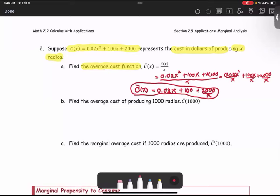In part B, we're going to find the average cost of producing 1000 radios, or C̄(1000). We're going to use the C̄(x) function that we derived in part A. So C̄(1000), replacing x with 1000, is 0.02 multiplied by 1000 plus 100 plus 2000 divided by 1000.